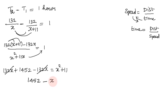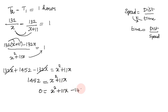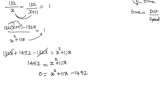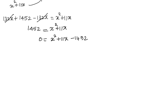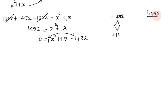After canceling the 132x terms, we get 1452 equals x squared plus 11x, so the quadratic equation is x squared plus 11x minus 1452 equals 0. We need to factor 1452 to find two numbers whose product is 1452 and whose difference is 11.